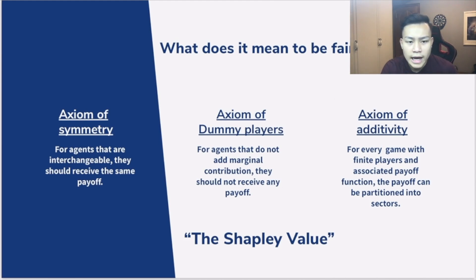For the axiom of symmetry, it basically says that for agents that are interchangeable, they're basically performing the same functions, they should receive the same payoff. That's fairly intuitive.